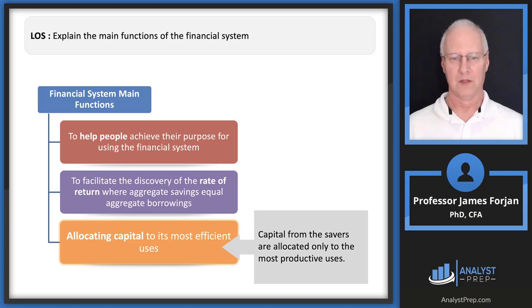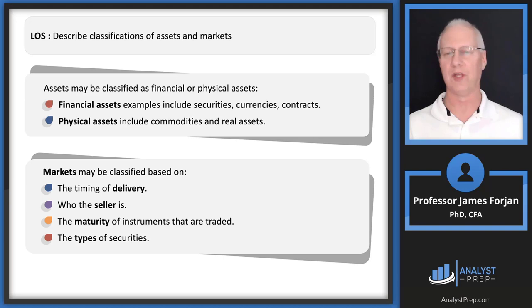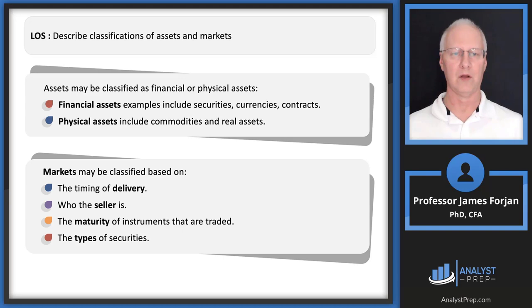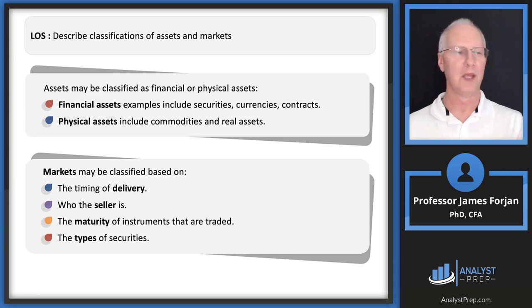Different classes of assets and markets: financial assets include stocks, bonds, securities, currencies like the U.S. and Canadian dollar, and contracts like forward and futures contracts — we'll spend significant time on derivatives throughout the CFA program. Physical assets are those you can wrap your arms around, like commodities — my favorite being the honeycrisp apple — plus energy, orange juice, and real assets like land and buildings.